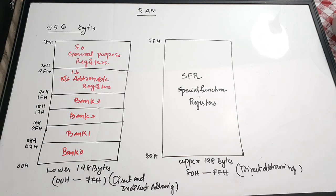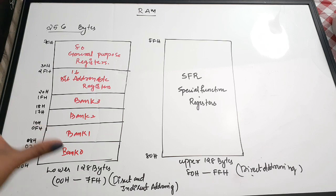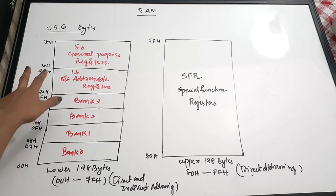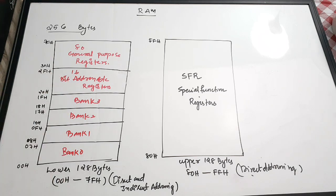From 20H to 2FH, 16-bit addressable registers are present. From 30H to 7FH, 80 general purpose registers are present.